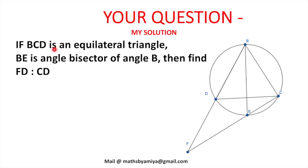In this question, BCD is an equilateral triangle, BE is the angle bisector of angle B, then we need to find the ratio of FD to CD.